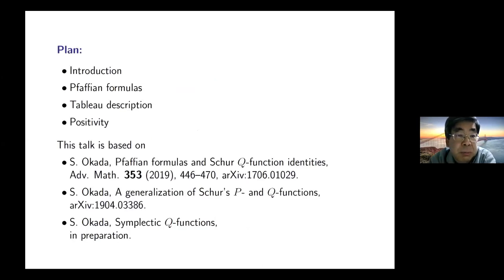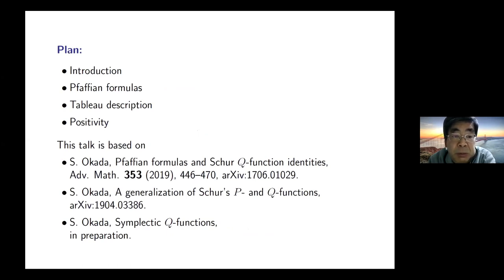This is my plan for this talk. First I introduce the usual Symplectic Q Functions and review several properties of Schur's Q Functions. Then I introduce a new W-group invariant symmetric polynomial, which I call a Symplectic Q Function or Symplectic P Function. I will show Pfaffian formulas and a tableau description, and finally give three positivity conjectures.